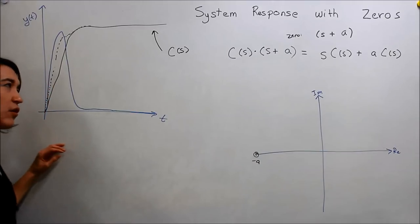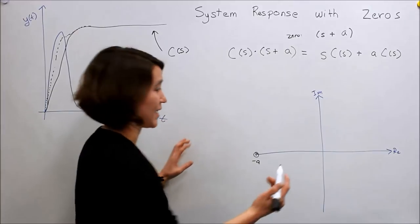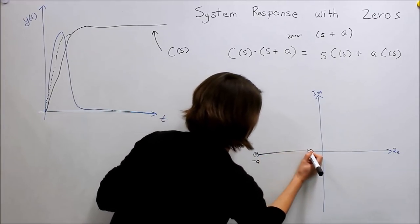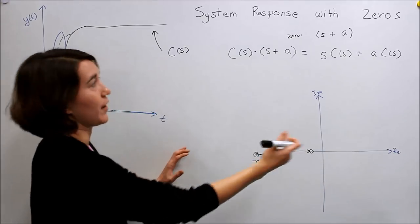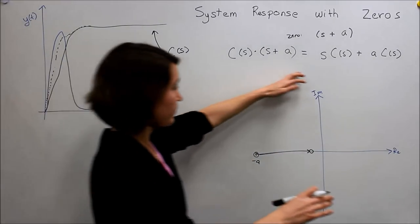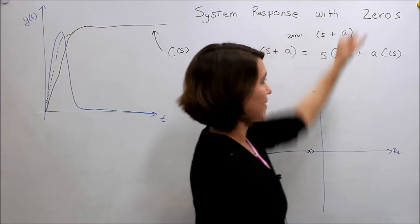So what if we take our zero in and we move it back in towards, closer to the imaginary axis? Then, say it's over here, we move it here. And again, the value here is still negative A. Then we would be essentially, instead of this being a very large scale, it's now scaled down.